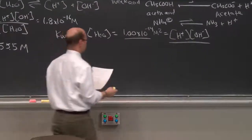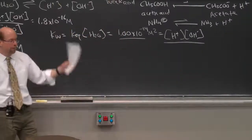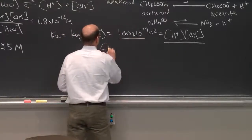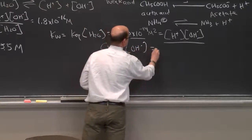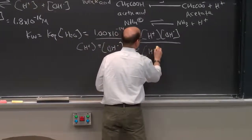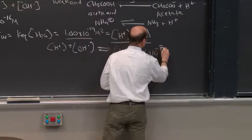Because the concentration of protons and the concentration of hydroxide anions are equal from the dissociation of water, we know that H+ equals OH-. We simply take the square root of this to find that the concentration of protons in one liter of water is 1 times 10 to the minus 7 molar.